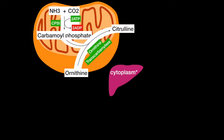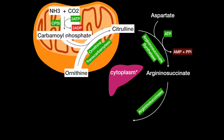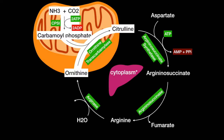Now, in the cytoplasm of the liver, aspartate is added, and energy from ATP yields argininosuccinate by argininosuccinate synthetase. By the enzyme argininosuccinate lyase, fumarate is expelled, and arginine is left. Finally, water is added, and using the enzyme arginase, urea and ornithine are created.